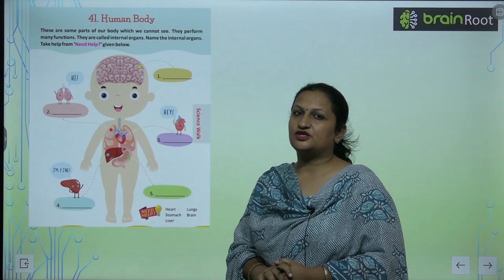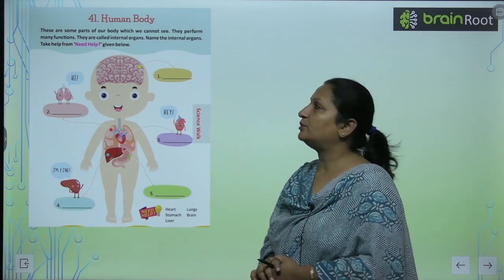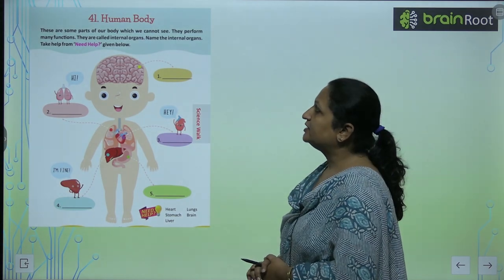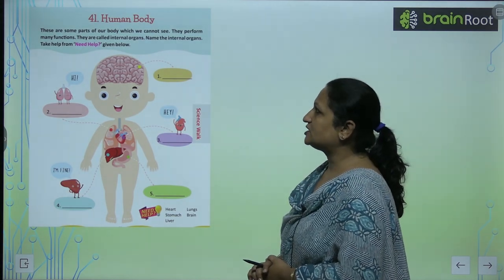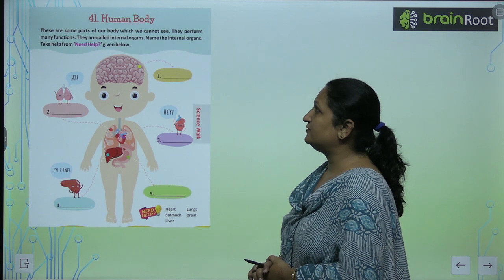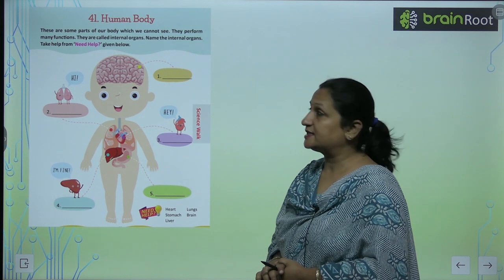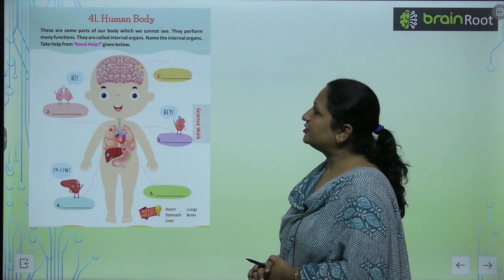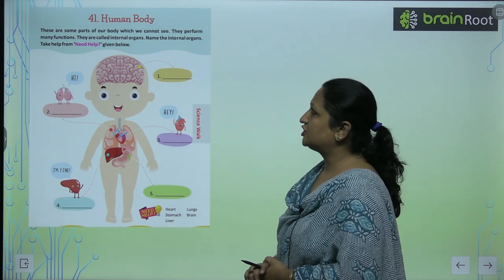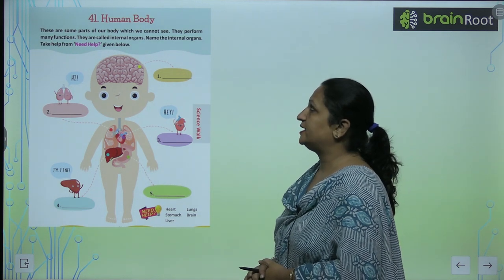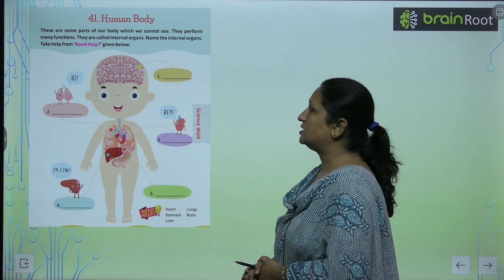See chapter 41, children: human body. There are some parts of our body which we cannot see. They perform many functions. They are called internal organs.